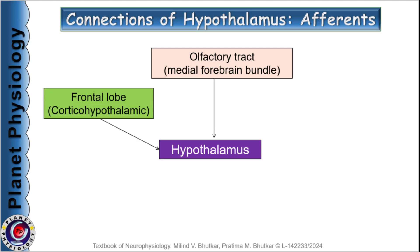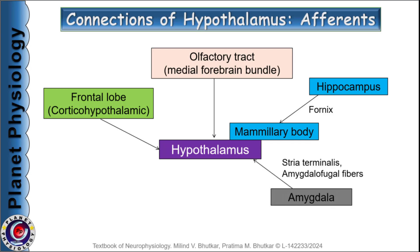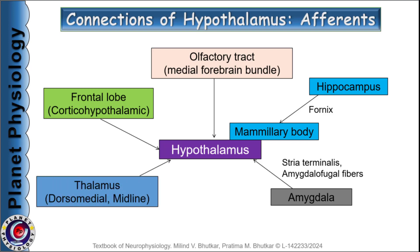Afferents from the frontal lobe of the cortex form corticohypothalamic fibres. Afferents from the hippocampus travel through the fornix and terminate in the mammillary body, while afferents from the amygdala form the stria terminalis. Finally, the hypothalamus receives afferents from the dorsomedial and midline nuclei of the thalamus and also from the tegmentum of the midbrain.